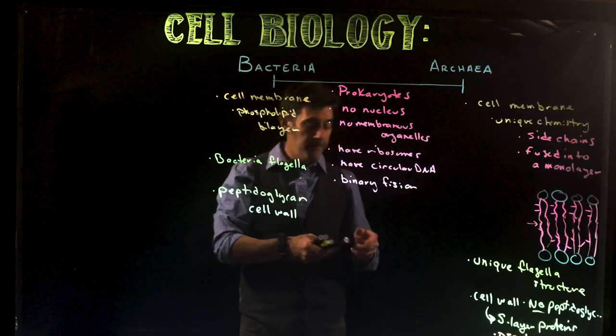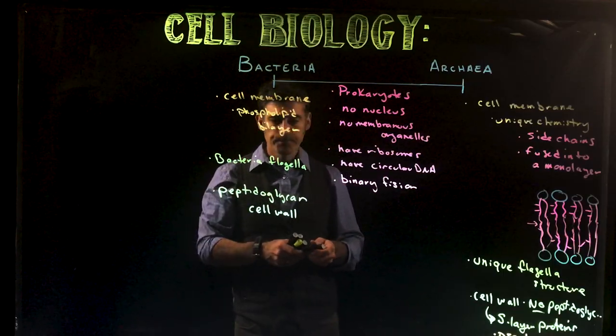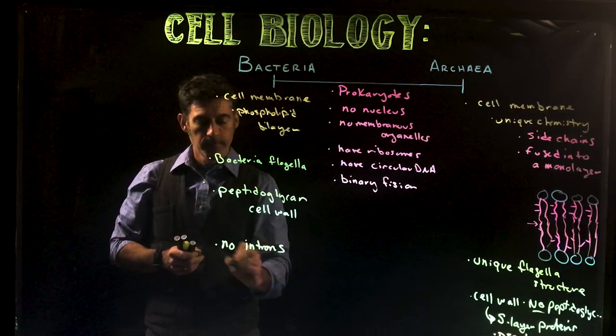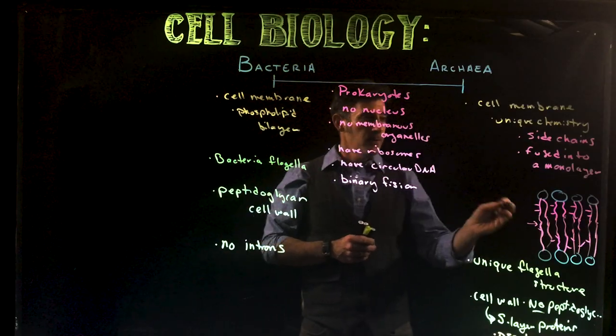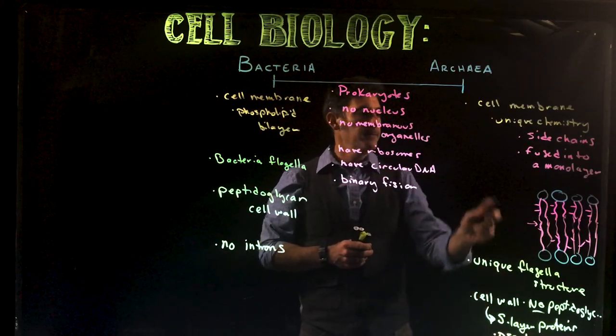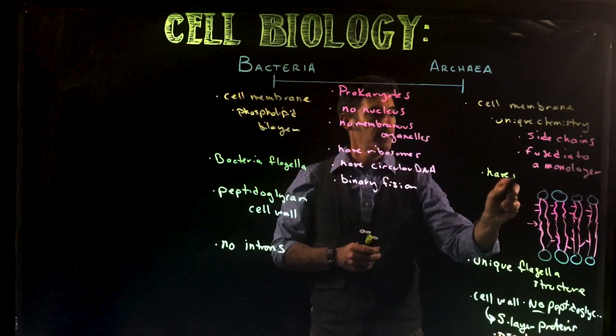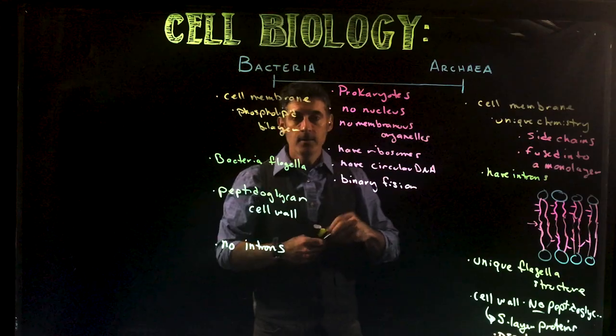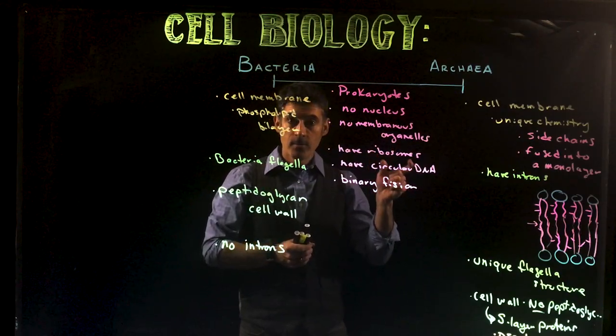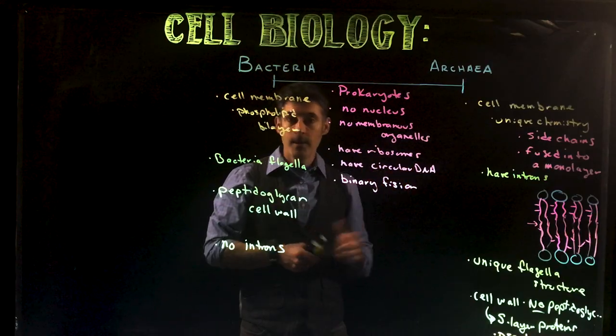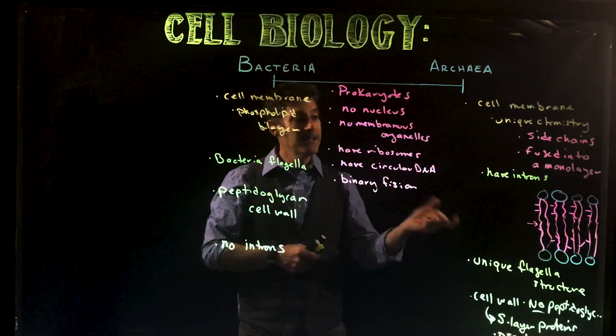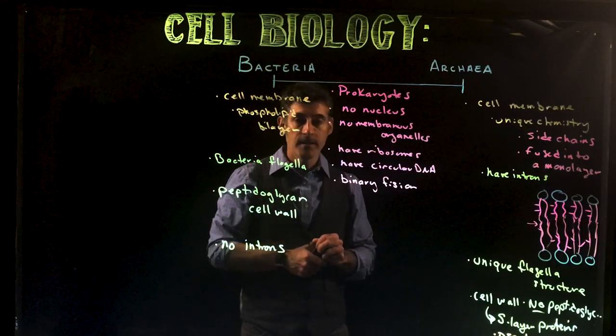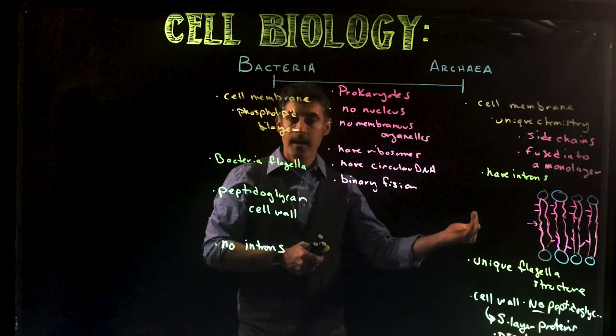Something else that archaea have that the bacteria don't. Bacteria have no introns. But the archaea do. So this comes back to the DNA for them. They actually have introns. So if you remember from another class, introns are sections of the DNA that don't code. They don't code for amino acids in the proteins. And they end up getting edited out after transcription. Bacteria, they do not have those types of sections. But archaea do.